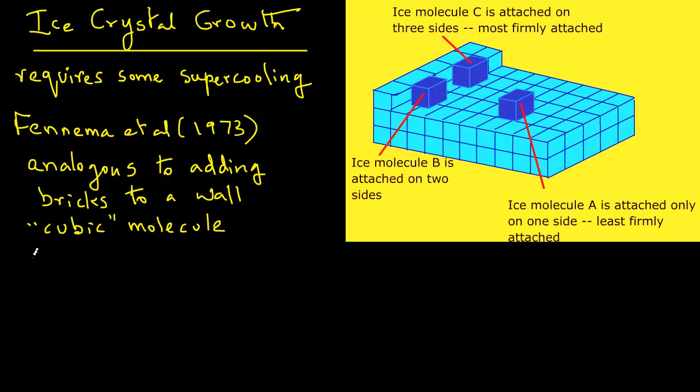Whereas, a molecule at site B is attached by two of its sides, as you see in this figure, and a molecule at site C is held most firmly as three of its sides are attached. Thus, molecule at site C is more firmly attached than molecules at sites A or B, demonstrating that the nucleus site and plane of attachment are important for crystal growth.